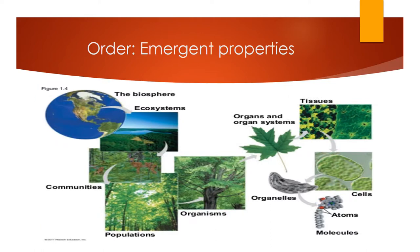The first property of life is order, or as we like to call it, emergent properties. Basically, this is just the hierarchy of organization in the environment. For example, if we look at the big picture we have the whole world or the biosphere, and then as you shrink down it gets smaller and smaller until eventually we get down to atoms and molecules.